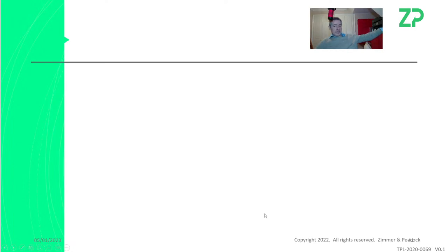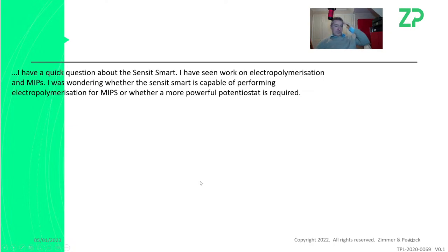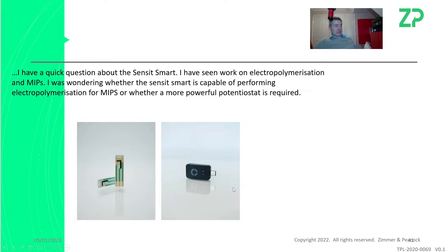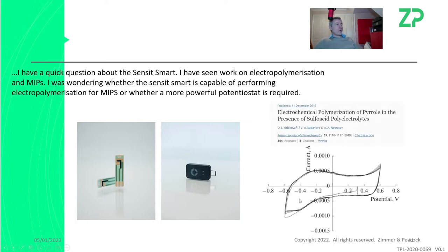Question eight: a really good question around the Sensit Smart. They're interested in doing electropolymerization for making MIPs — molecularly imprinted polymers — and wondering if the Sensit Smart is powerful enough. I've heard directly from PalmSense that they like our hypervalued carbon electrodes. Because our hypervalued carbon electrodes have a silver/silver-chloride counter electrode, the compliance voltage requirement is much lower with our screen-printed electrodes compared to others. That means the Sensit Smart can actually do its job. We do a lot of pyrrole MIPs-type electropolymerization, just FYI.